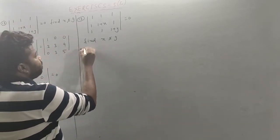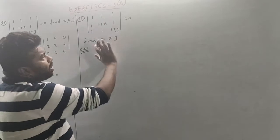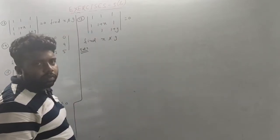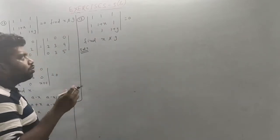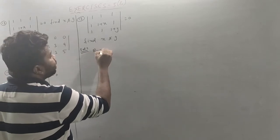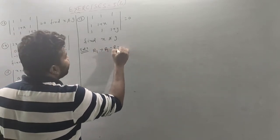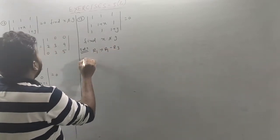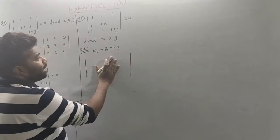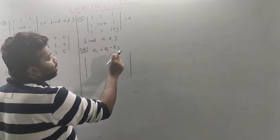The question is more complex. If we solve the problem using the property, the question is how to use the property. R1 times 2, R1 minus R3. If we use the property, we have to solve the problem: R1 times 2, R1 minus R3.